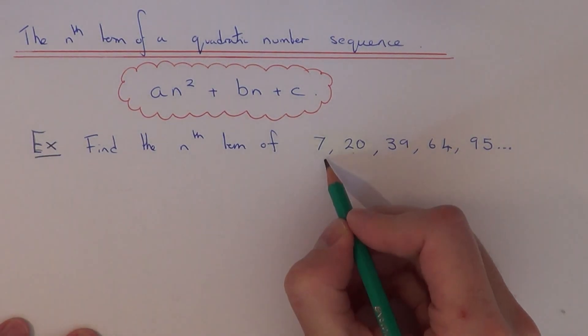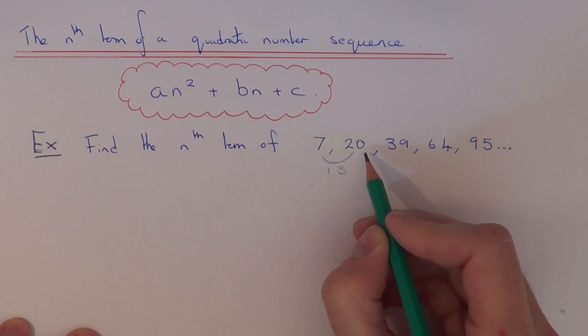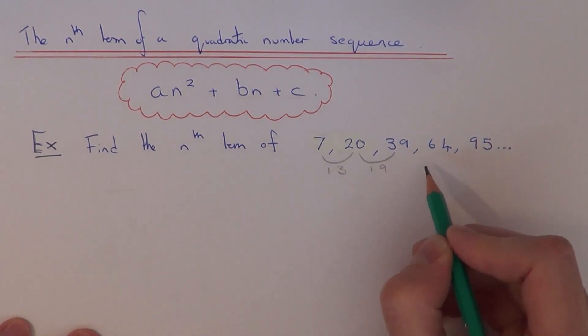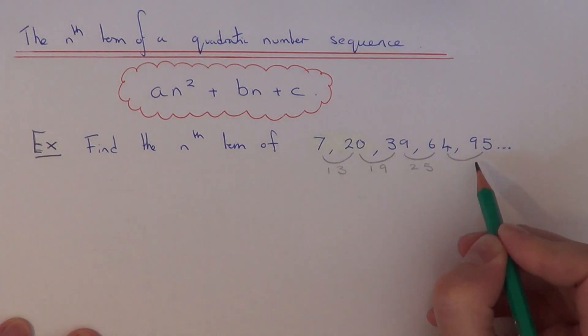So to begin with, let's work out the first differences. So the difference between 7 and 20 is 13. The difference between 20 and 39 is 19. The difference between 39 and 64 is 25. And the difference between 64 and 95 is 31.